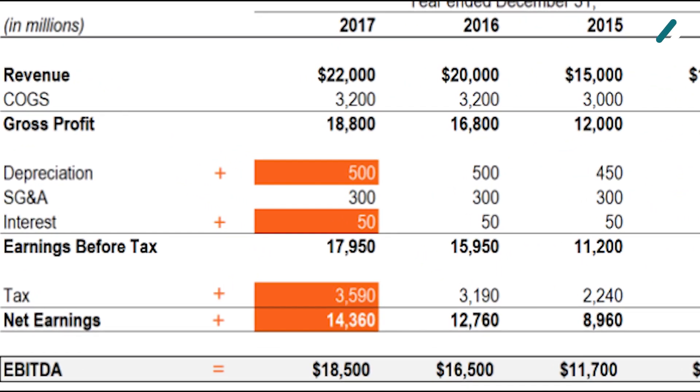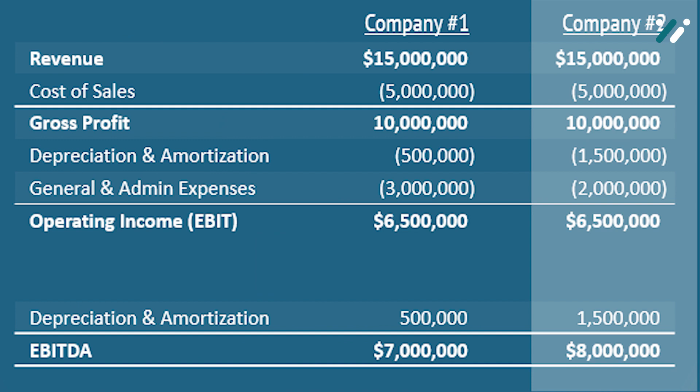Before amortization: amortization refers to the gradual write-off of intangible assets over time. By excluding this, EBITDA focuses on the operational aspect without the non-cash impact of amortization.